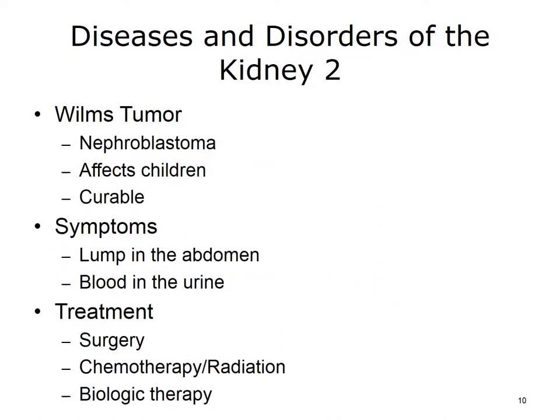Renal dialysis is the treatment for kidney failure. There are two main types of dialysis: hemodialysis and peritoneal dialysis. Both types filter the blood to rid your body of harmful wastes, extra salt, and water. Hemodialysis requires a machine. Peritoneal dialysis uses the lining of your abdomen to filter your blood.